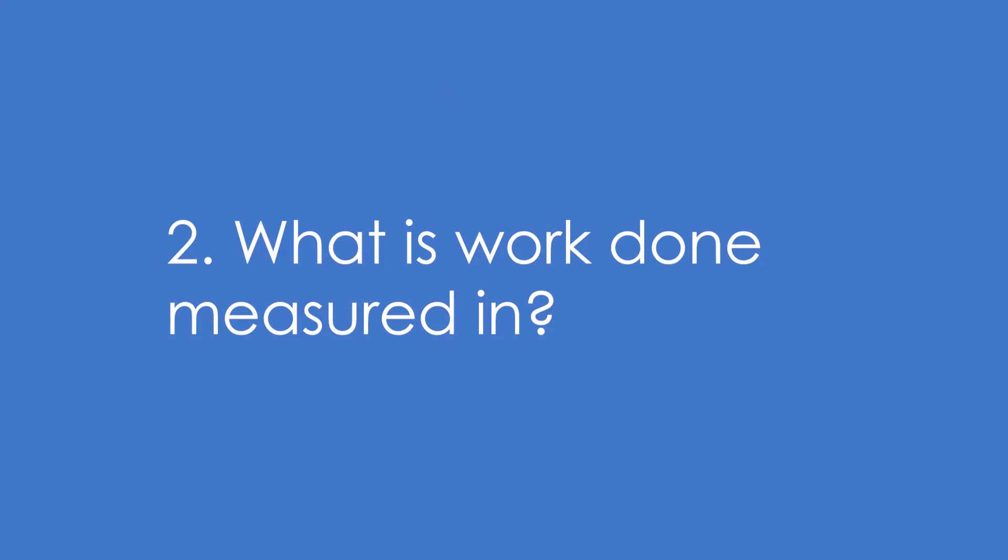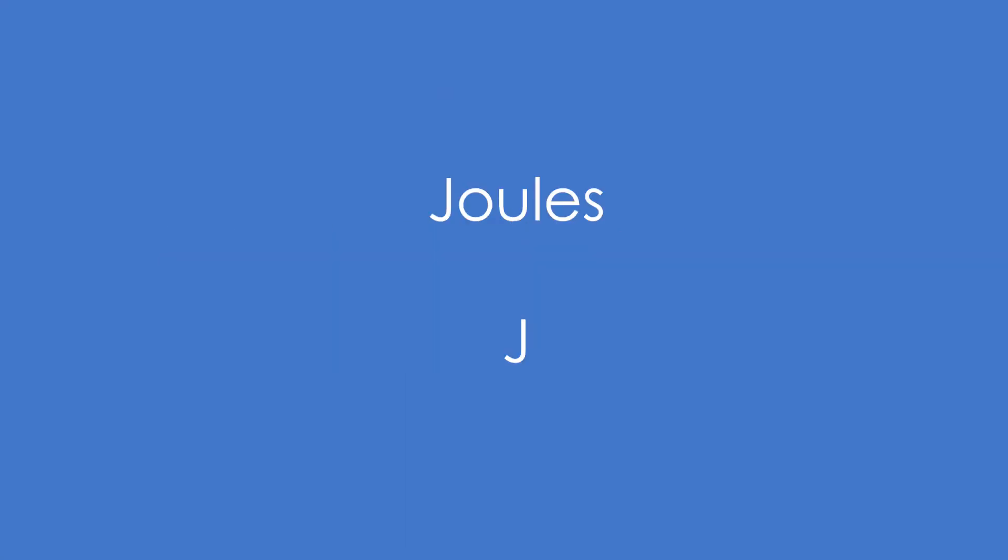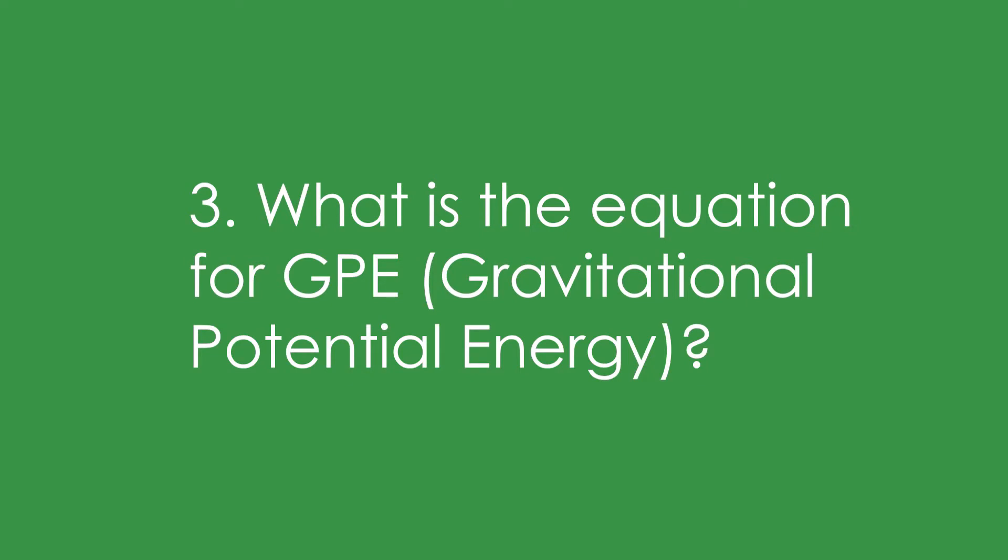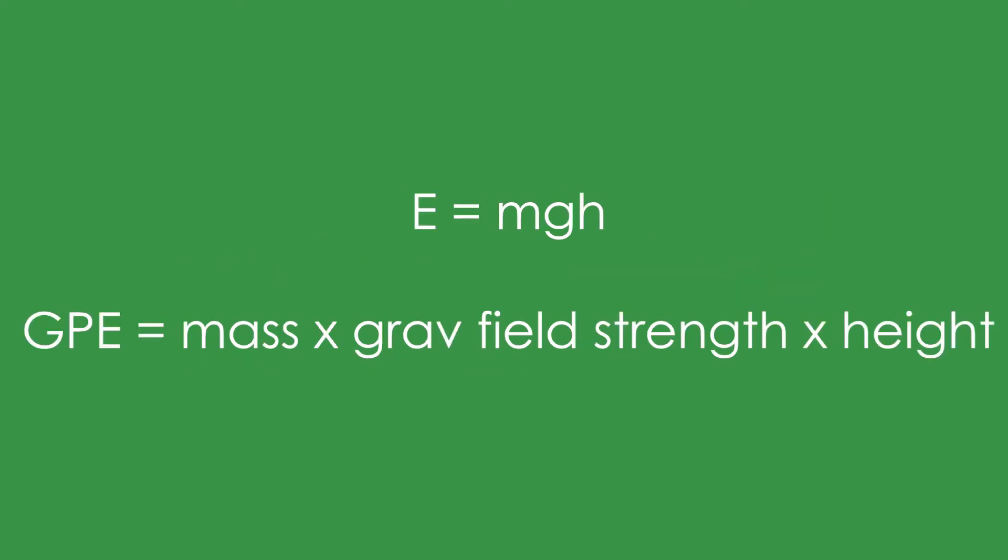2. What is work done measured in? It's joules because it is energy. 3. What is the equation for gravitational potential energy, or GPE? It's E equals MGH. GPE equals mass in kilograms times gravitational field strength, 9.81 times height. Technically, change in height.